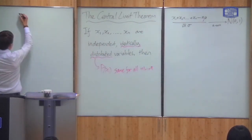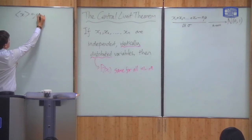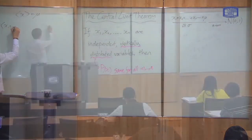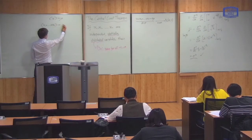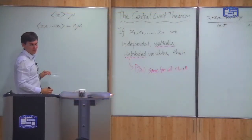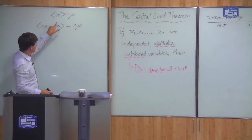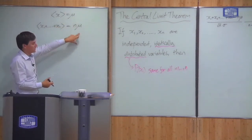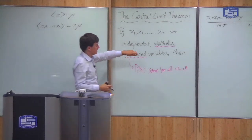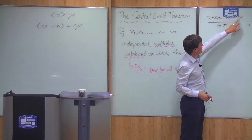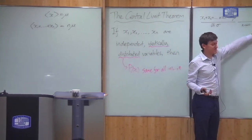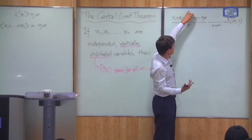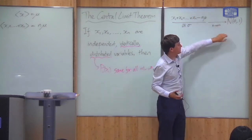Just some results on this. The mean of a single variable is equal to mu. So the mean of the sum x1 plus xn is therefore equal to n times mu. In this equation, when I subtract n*mu, that is what ensures that the mean is 0 — the sum has mean n*mu, and I subtract n*mu, so the mean here is 0.